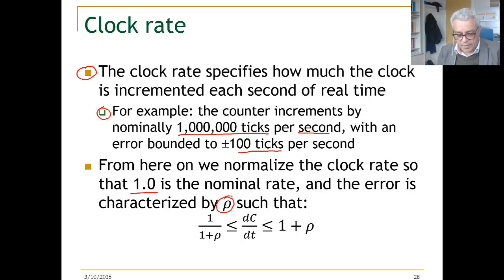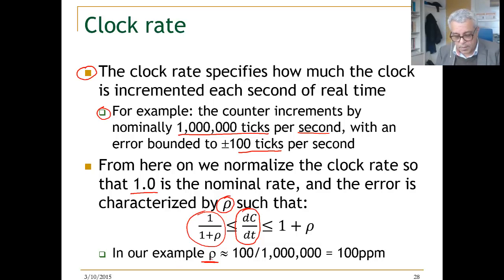This is saying the rate of change of the clock with respect to real time may vary between at the upper bound 1 plus rho, and at the lower bound 1 divided by 1 plus rho. And rho, if we take our example, will be 100 ticks divided by 1 million. So this is 100 parts per million. This says that the rate of change of the clock with respect to real time can be a little bit faster, so it goes up to 1 million plus 100 when it's fast, or can be slower, divided 1 over this.